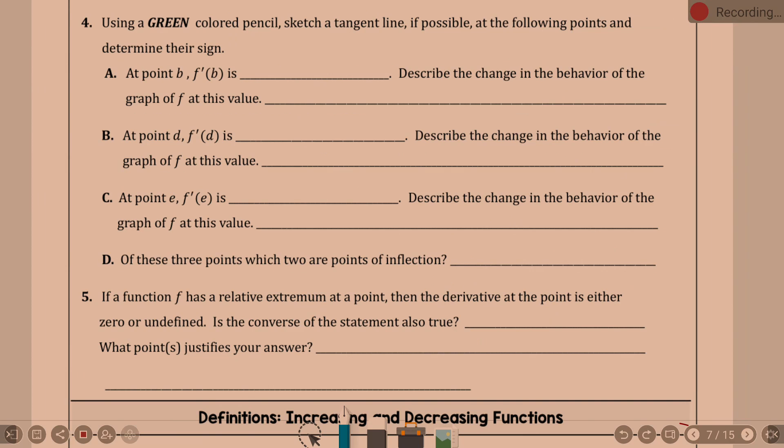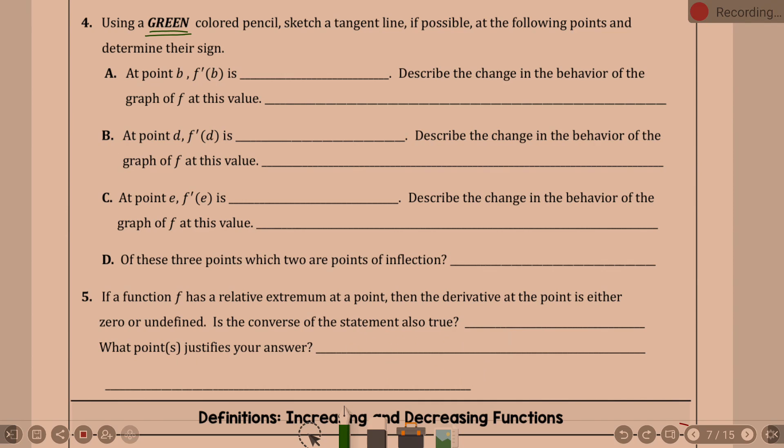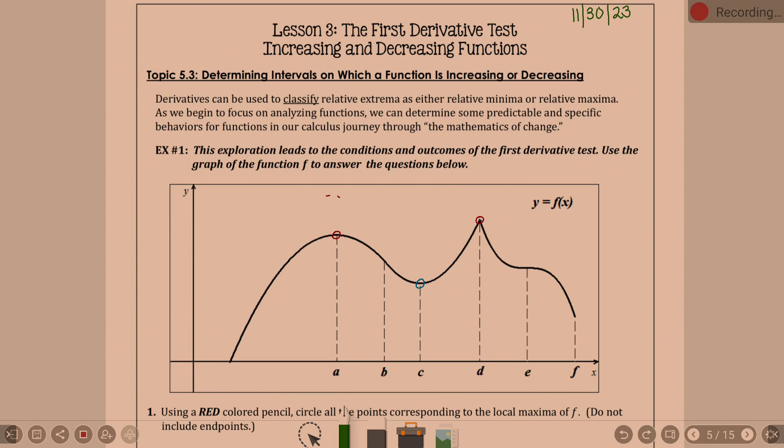Now it's using green, so whatever your third color is. Sketch a tangent line if possible at the following points and determine their sign. We are going to want tangent lines if possible at b, d, and e. Let me go back here. A tangent line at b. Well, here's b. A tangent line, what's it going to do? It's going to go something like this.